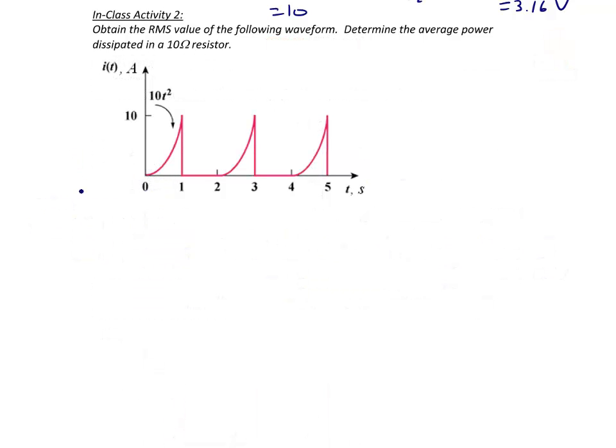Let's look at another example. Obtain the RMS value for the following waveform and determine the average power dissipated in a 10 ohm resistor. Since this is the current waveform, we're going to use the formula P equals I_RMS squared times R in order to find the average power. But let's find the RMS value first. This waveform has a period of 2 seconds because it repeats every 2.